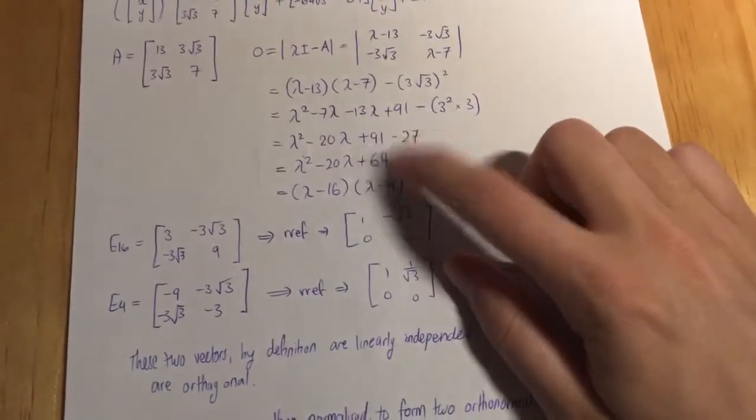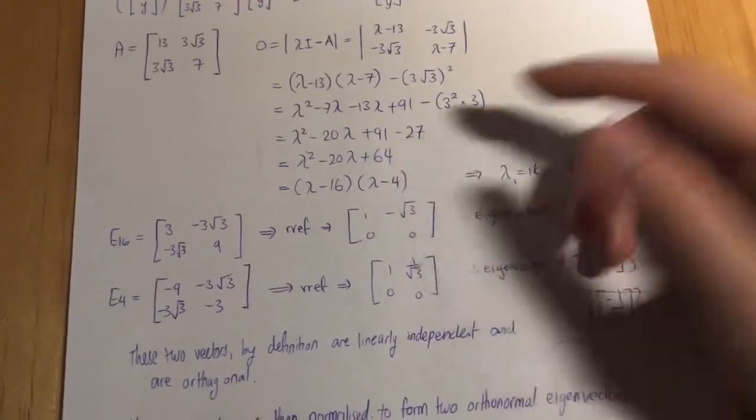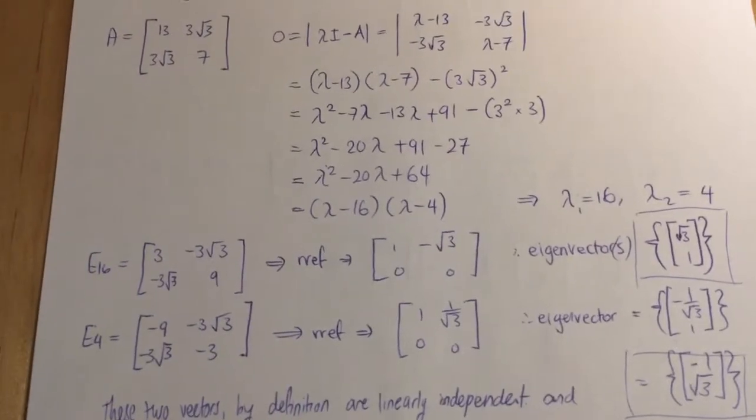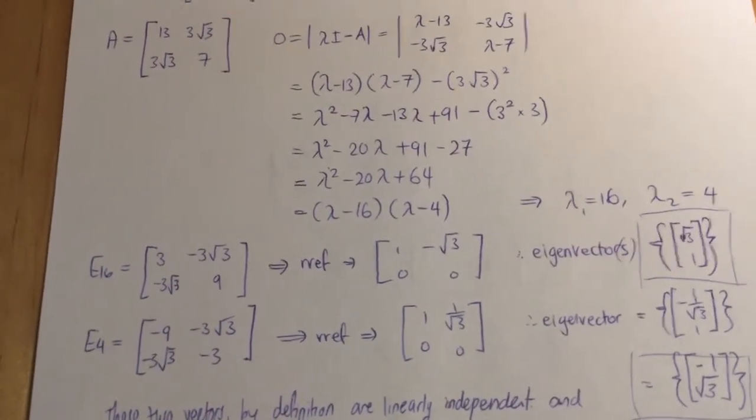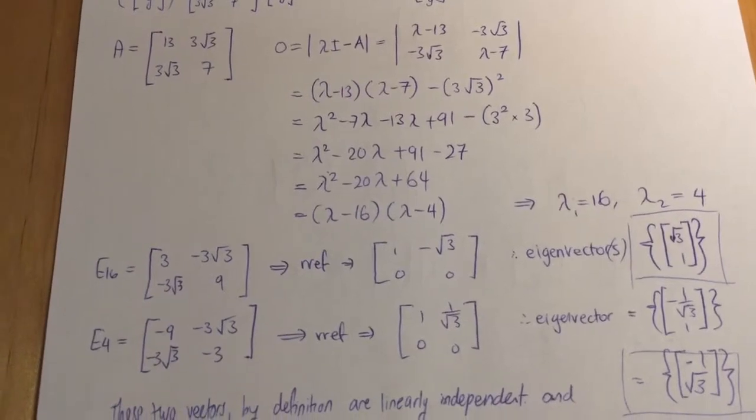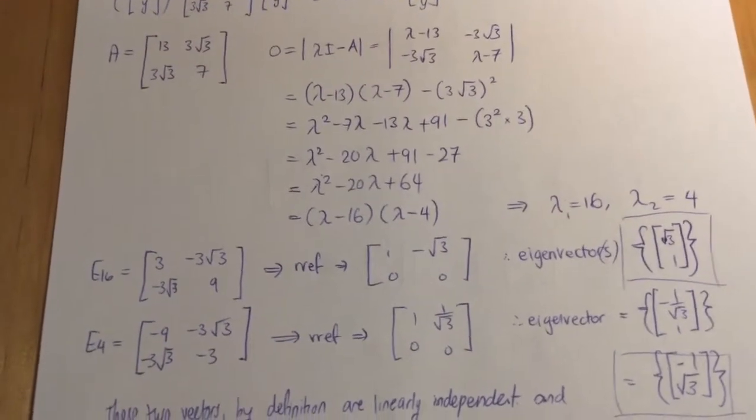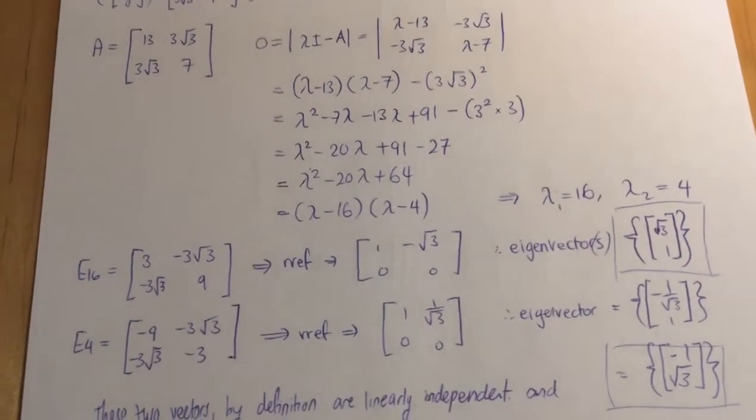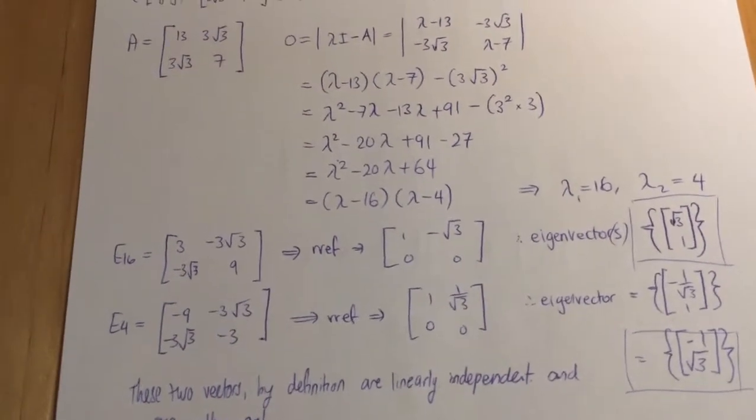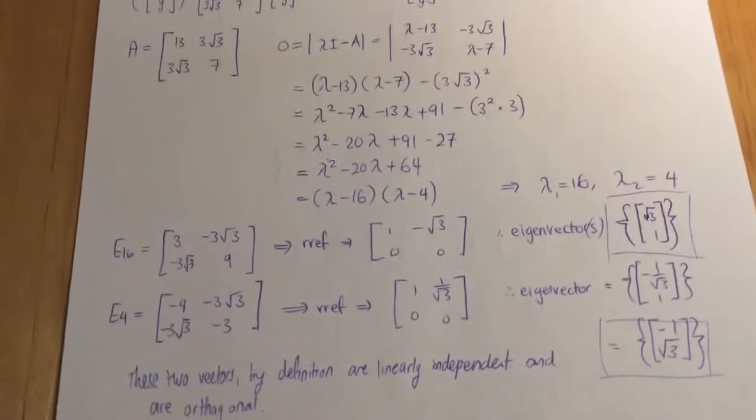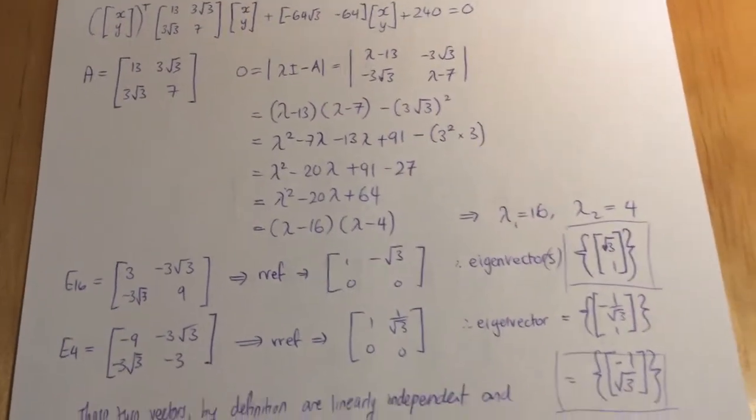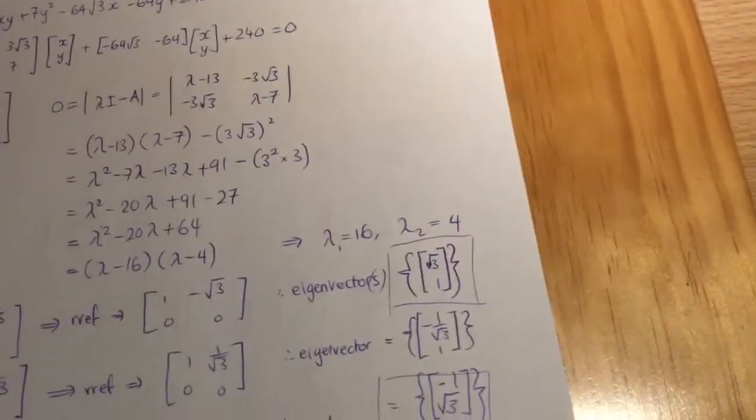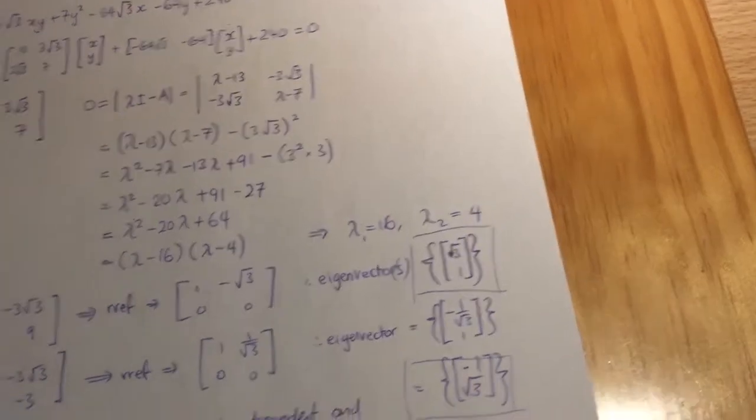We can simplify: -7λ and -13λ becomes -20λ. 3² and (√3)² is 9 × 3 = 27. This is just a bit of arithmetic. When we collect like terms, we get λ² - 20λ + 64. You can factorize this using the quadratic formula if you'd like, or you can think what are two things that sum to 20 and have a product of 64. So 16 and 4 is a safe bet. That means our eigenvalues λ₁ and λ₂ equal 16 and 4, respectively.